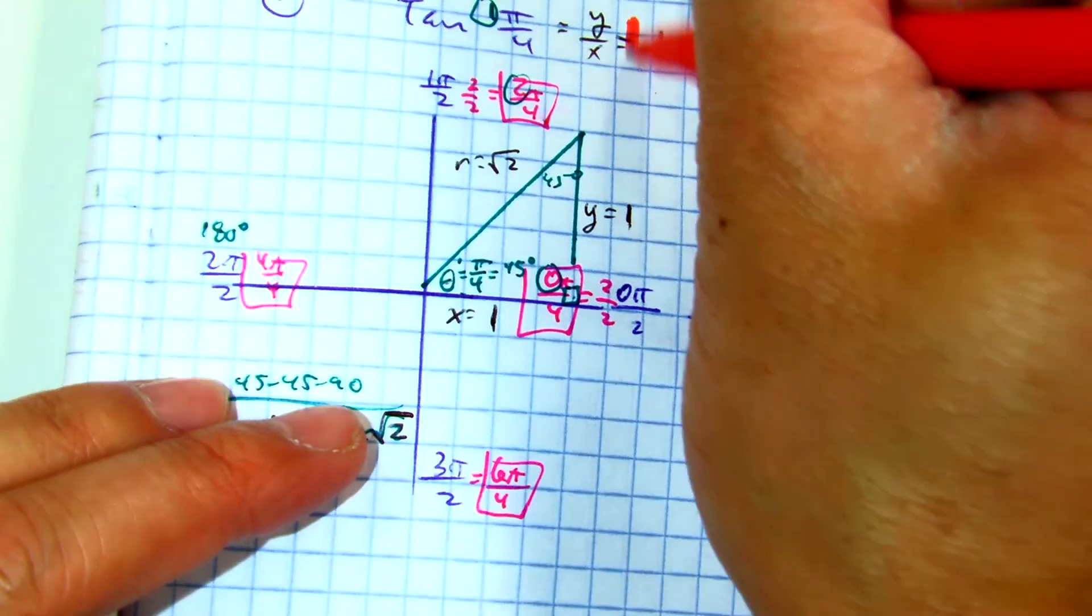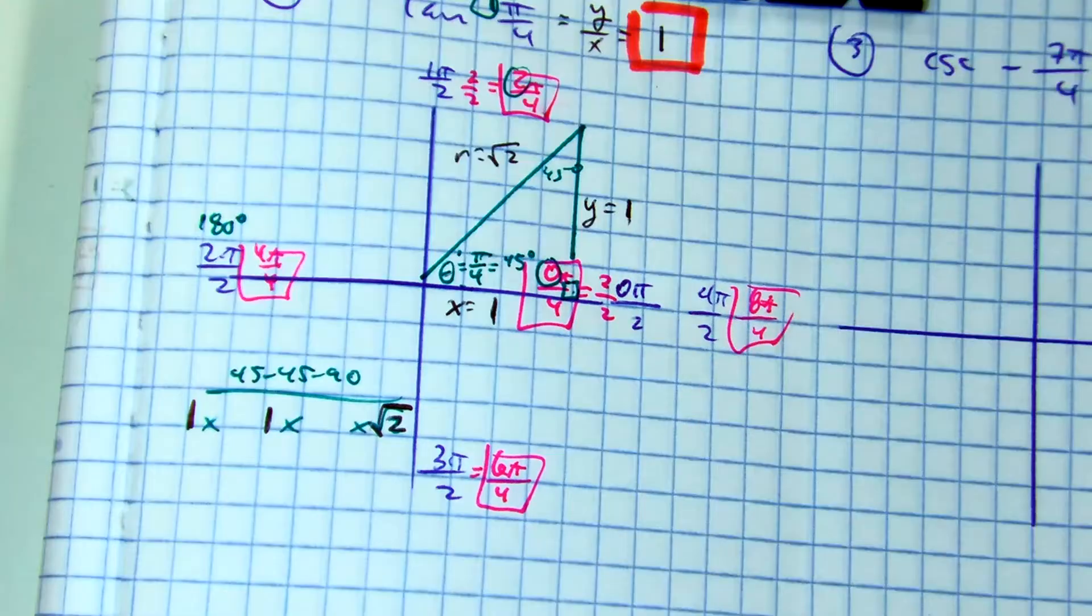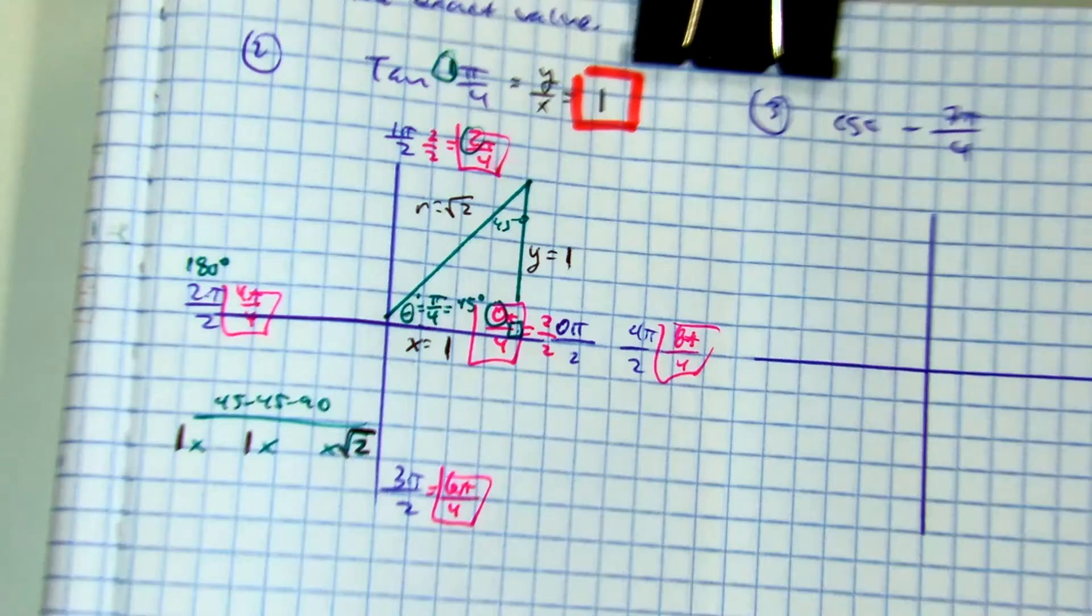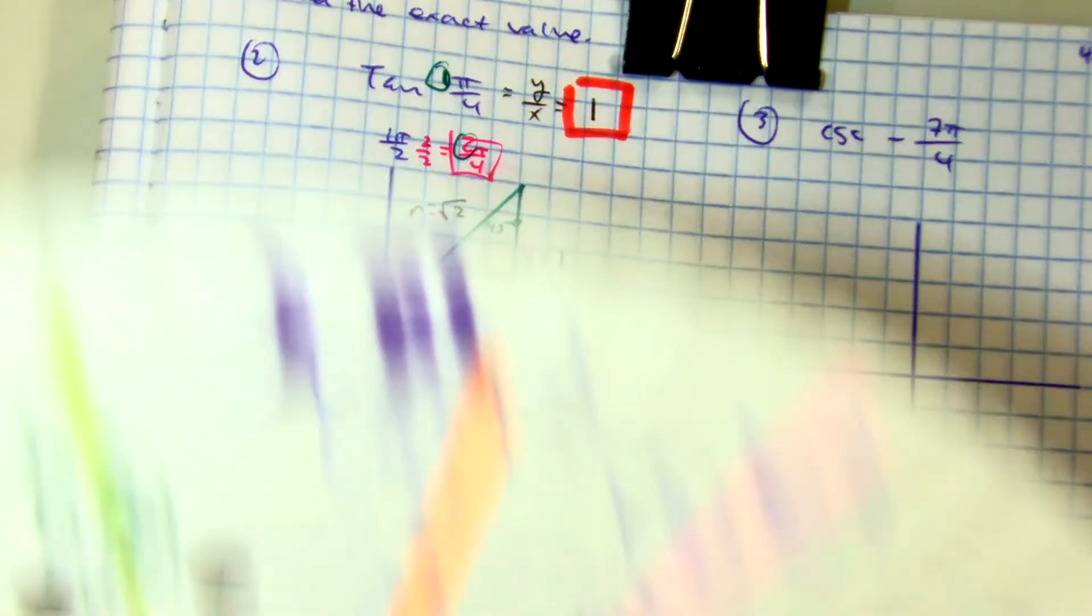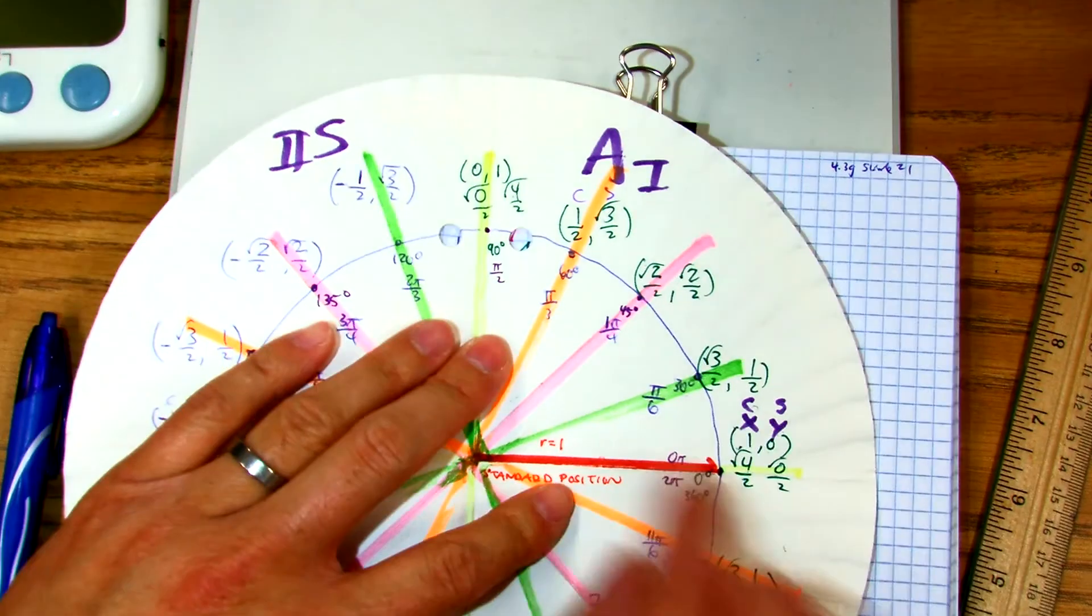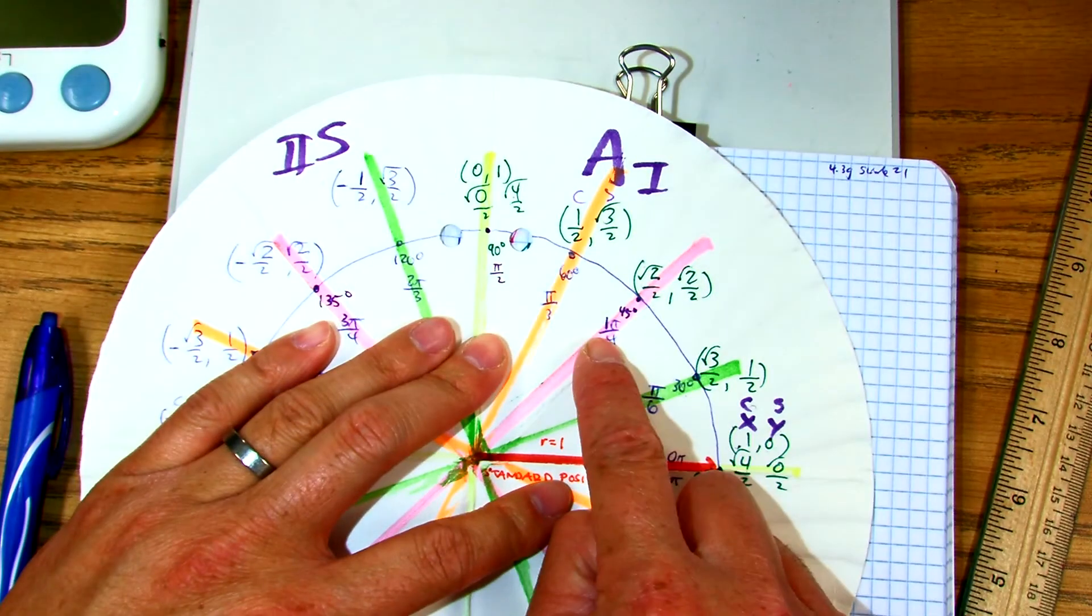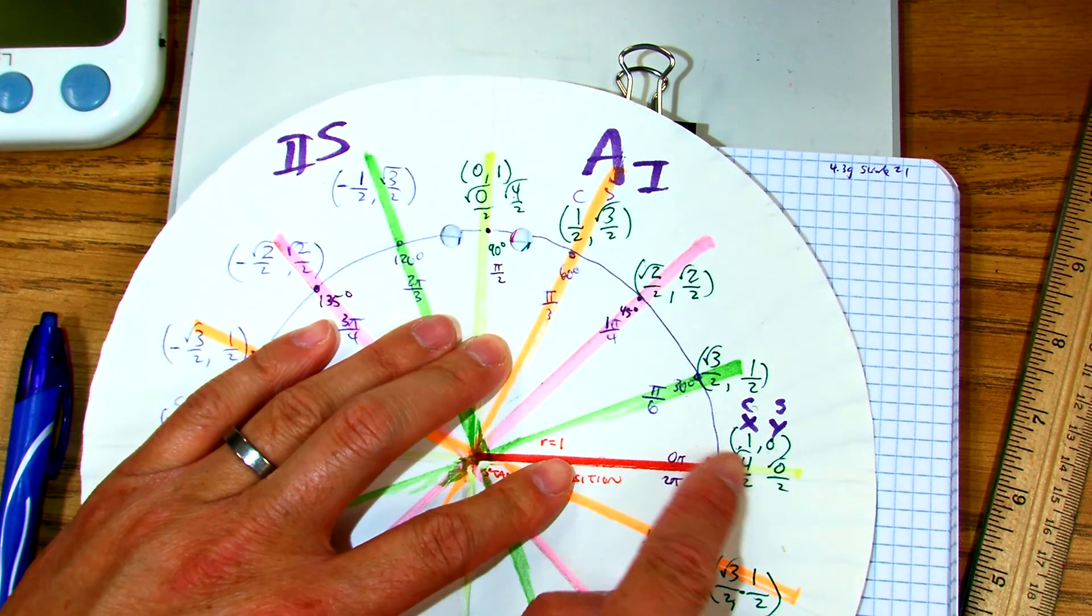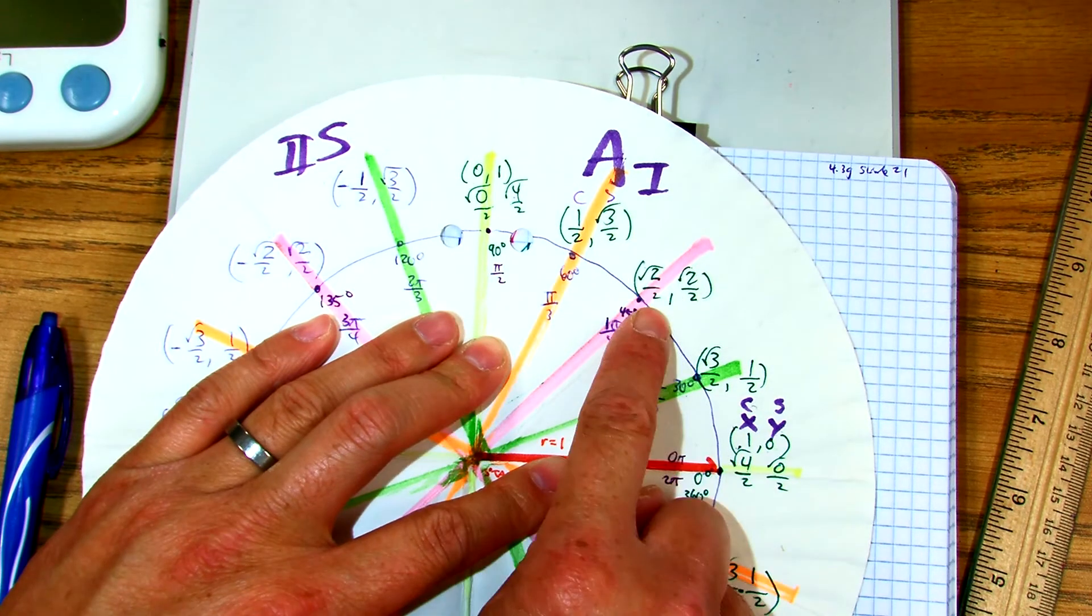Let me show you how fast that works on the unit circle. Here's my paper plate. Here is a 45 degree angle, pi over 4. Remember, the first ordered pair is cosine, and the second one is sine.